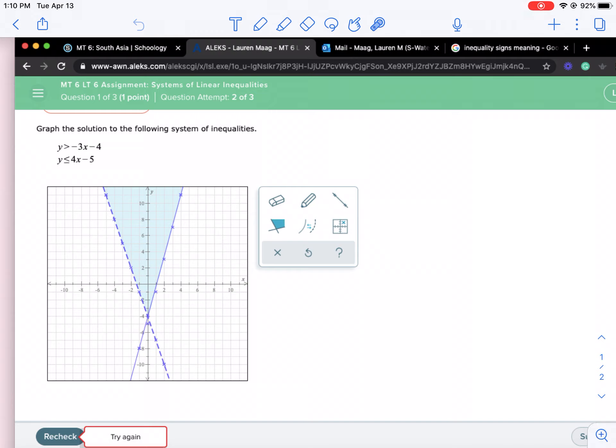The first inequality I notice here looks right. That is, it has a y-intercept of negative 4. It goes down 3 to the right 1, dash line, shading above it.